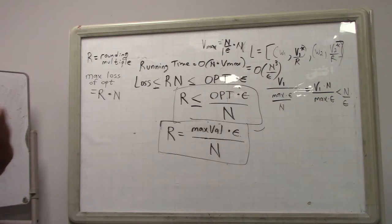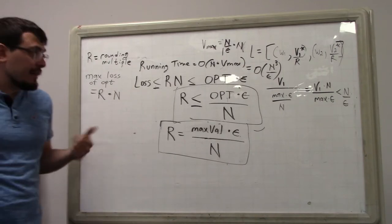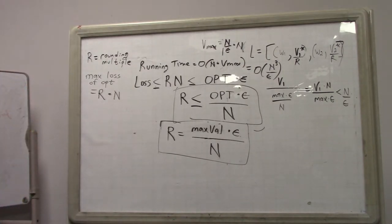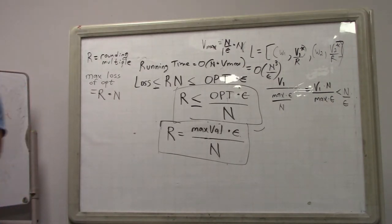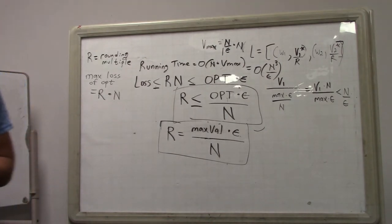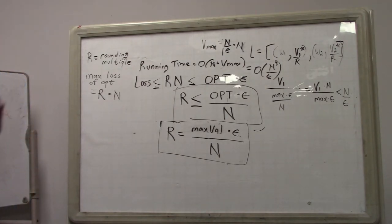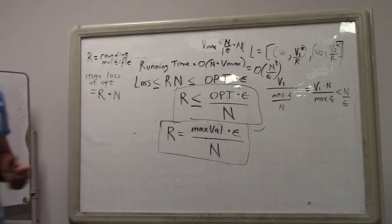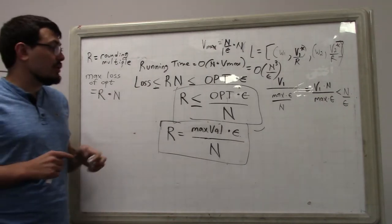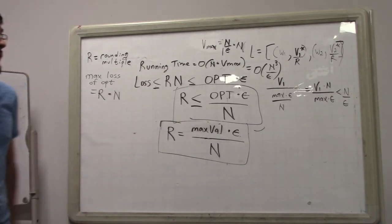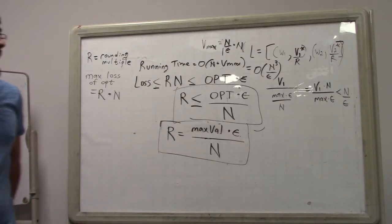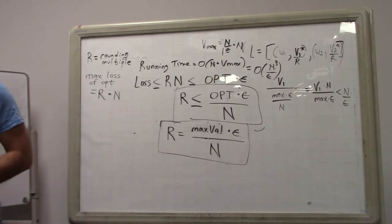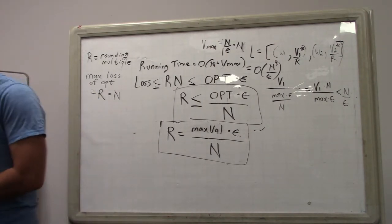At its core, this is a simple idea: round values so you can reduce them, and having reduced them, your exact dynamic programming algorithm — which requires small values to be efficient — will be faster.